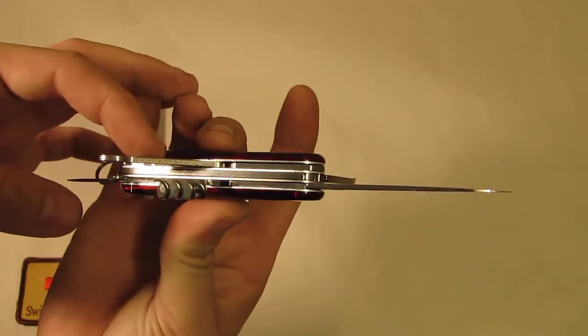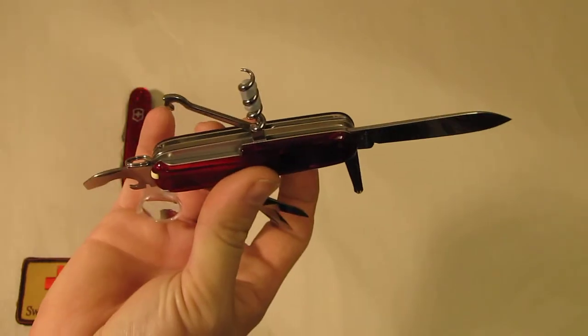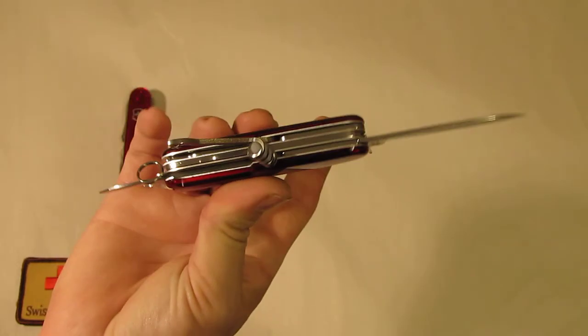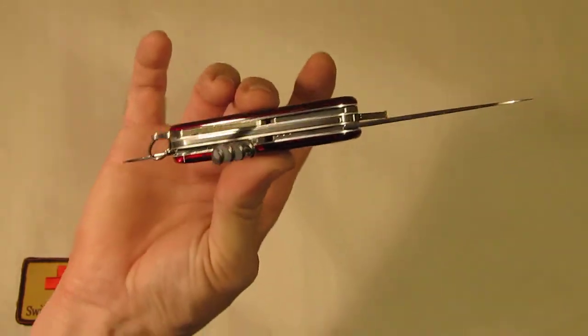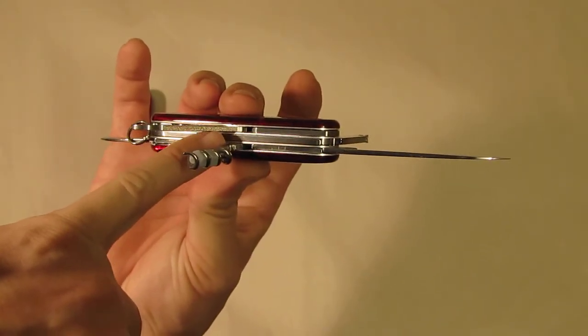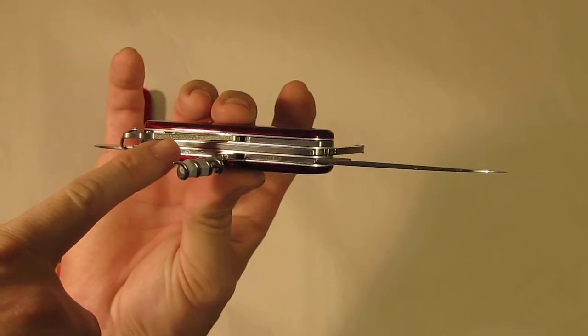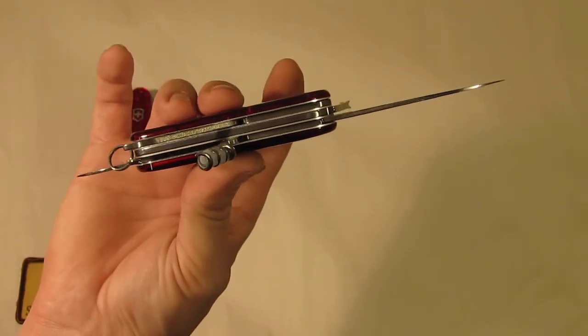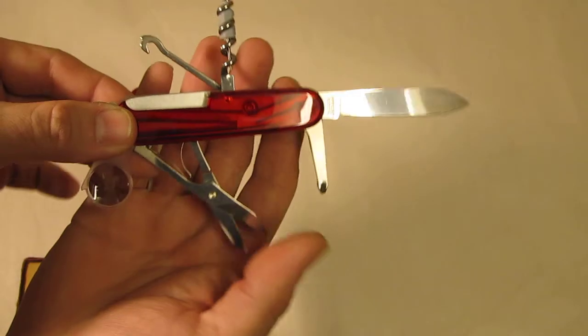And of course the hook, the special purpose hook, for carry luggage or litter bags or whatever. The special feature is on the hook we also have a nail file kind of striker surface, a multipurpose surface.